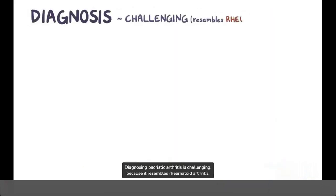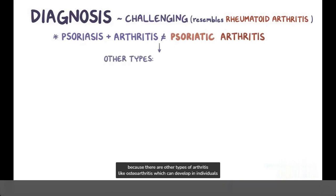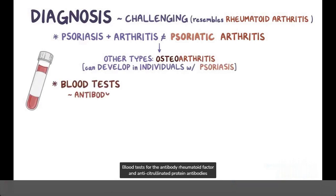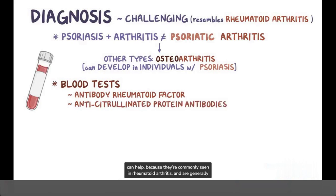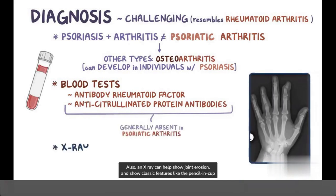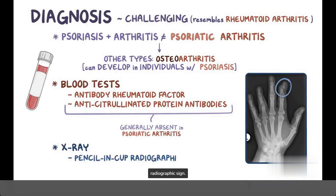Diagnosing psoriatic arthritis is challenging because it resembles rheumatoid arthritis. In addition, having psoriasis and arthritis doesn't always mean psoriatic arthritis because there are other types of arthritis like osteoarthritis, which can develop in individuals with psoriasis. Blood tests for the antibody rheumatoid factor, as well as anti-citrullinated protein antibodies, can help because they're commonly seen in rheumatoid arthritis and are generally absent in psoriatic arthritis. Also, an x-ray can help show joint erosion and show classic features like pencil and cup radiographic sign.